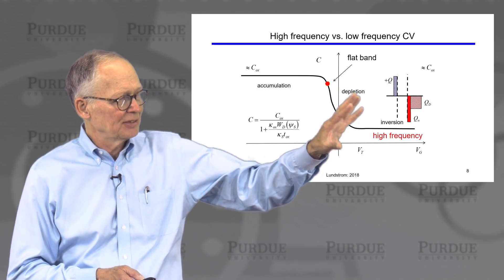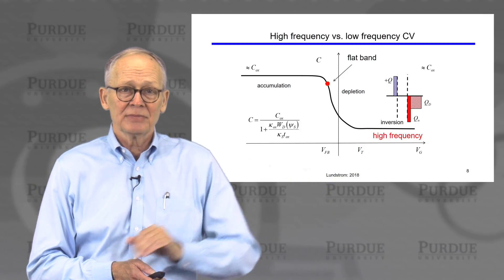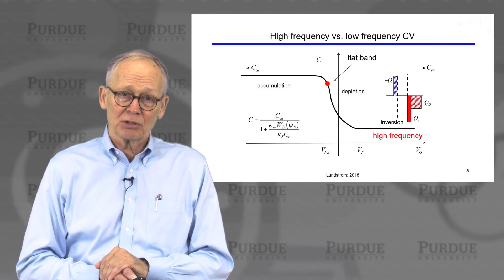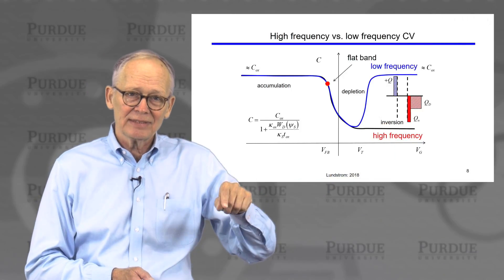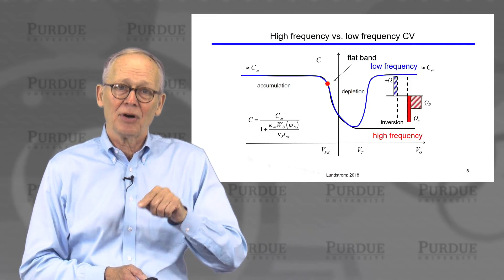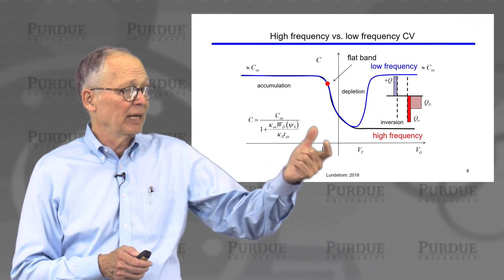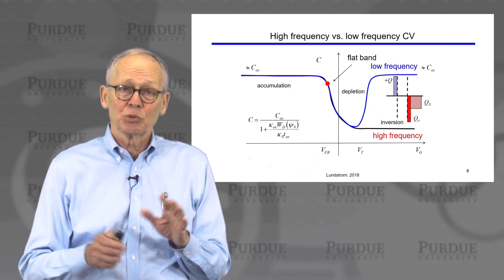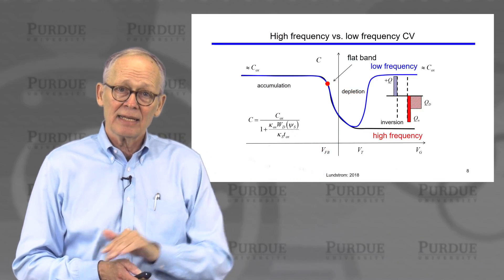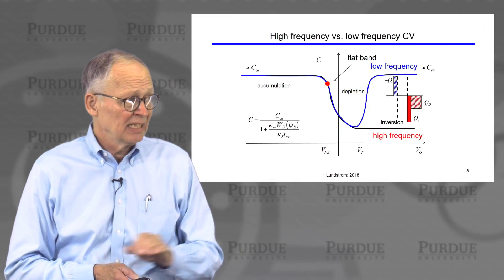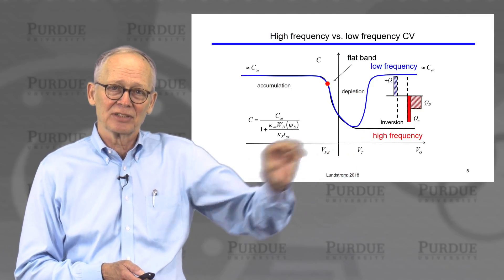Once more about inversion: at high frequencies, it is as though the inversion layer charge is not there. If I measure at a low enough frequency, however, the generation processes needed to increase and decrease the inversion layer charge can keep up with the AC signal. Then it would be as though I have two metallic plates around the insulator, and my capacitance would rise back up to the insulator capacitance. So a dramatically different capacitance is seen in the inversion region at low frequency. Typically one must be very careful to achieve low enough frequencies to observe this, and the high-frequency characteristic is more easily measured.